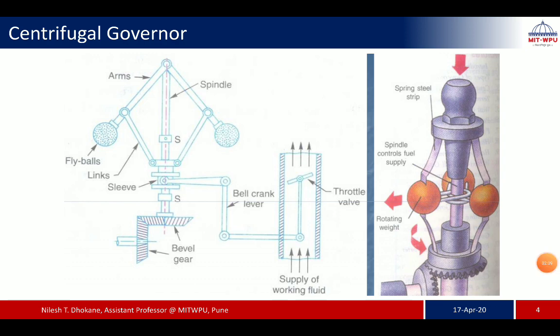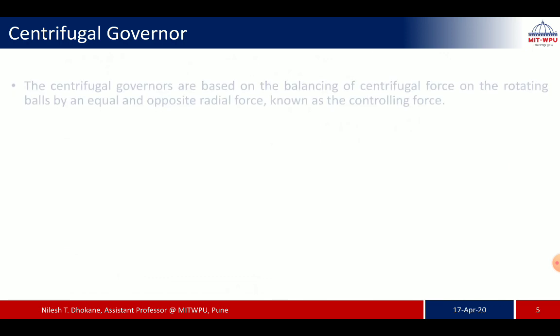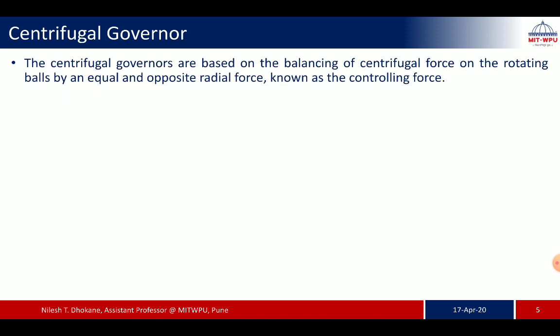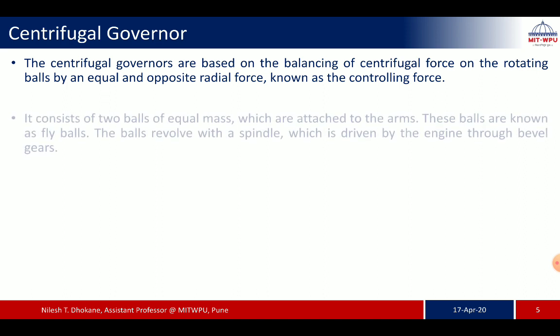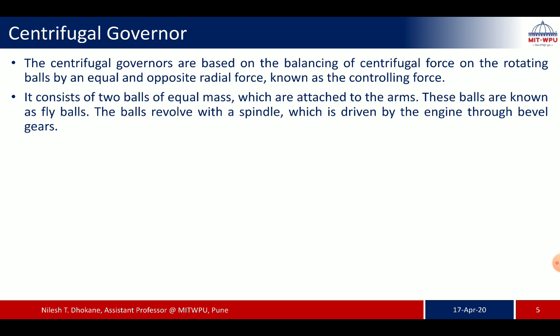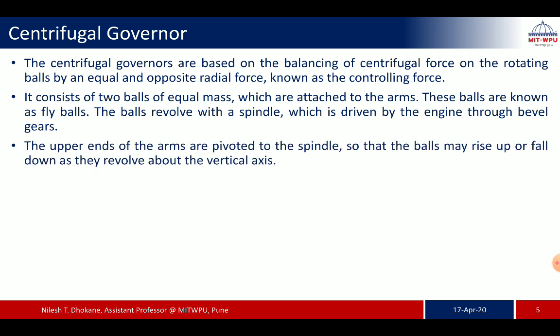This picture shows the centrifugal governor and its generalized arrangement, including how it is connected to the throttle valve so that it can control the fuel supply to the IC engine. Centrifugal governors are based on balancing the centrifugal force on the rotating balls by an equal and opposite radial force known as controlling force. It consists of two balls of equal mass attached to arms — these balls are known as fly balls. The fly balls revolve with a spindle driven by the engine through bevel gears, and the upper ends of the arms are pivoted to the spindle.